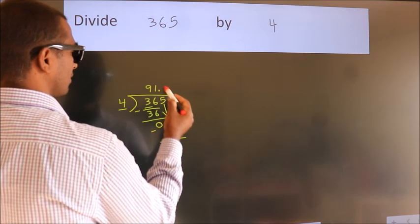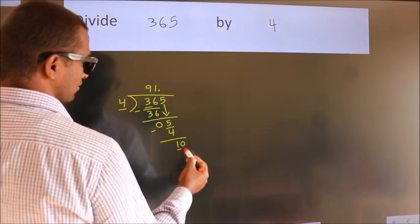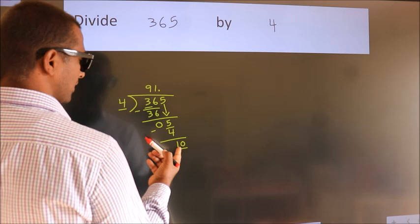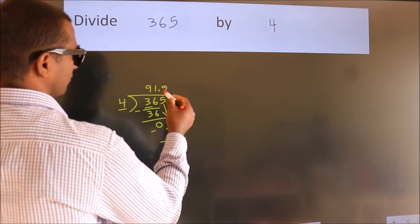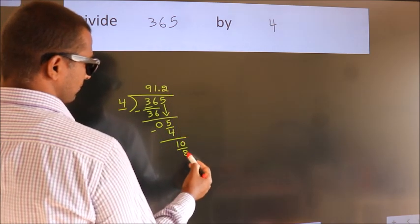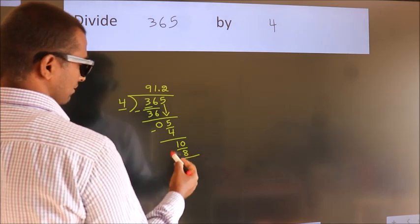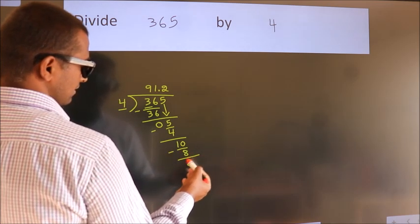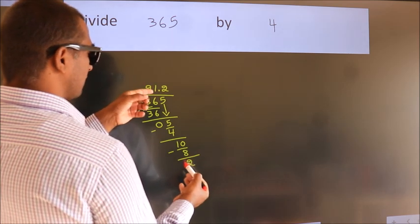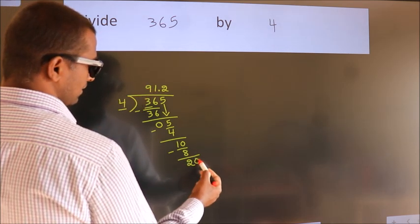So what we do is we put a dot, take 0. So 10, a number close to 10 in the 4 table is 4 times 2 is 8. Now we subtract, we get 2. After this, we already have the decimal, so directly take 0.